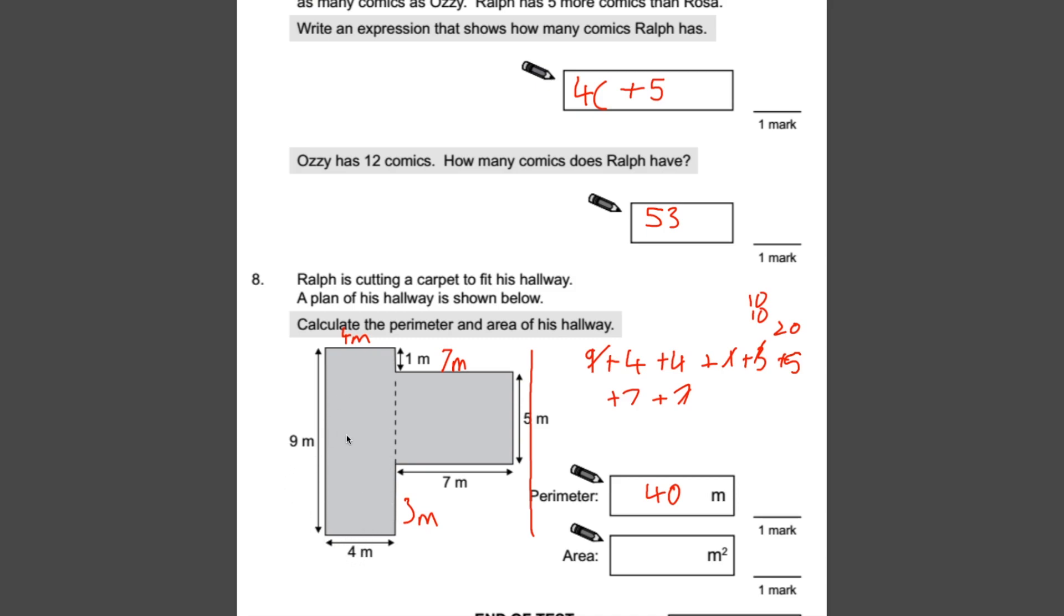which is thirty-six meters squared. And this rectangle here is five times seven. So five times seven is thirty-five. If we add them together, we get seventy-one meters squared.